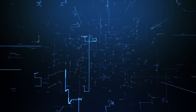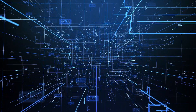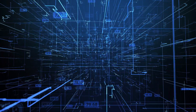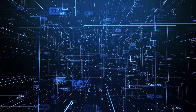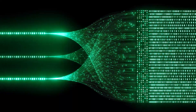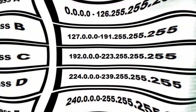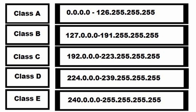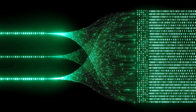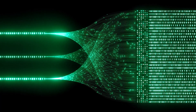Now let's talk IP address classes and subnetting. IPv4 addresses are divided into classes — Class A, Class B, and Class C are the most common. Each class has a range of addresses suited for different types of networks. For example, Class A is for huge networks, while Class C is for smaller networks.